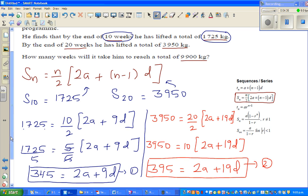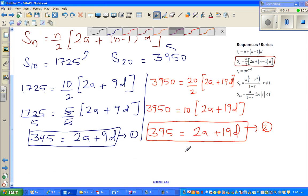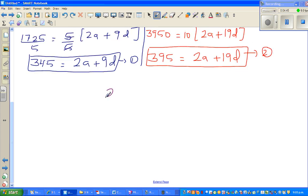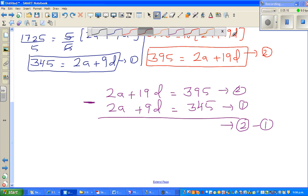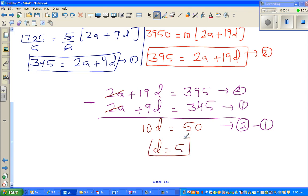This has become a simultaneous equation. I'm going to write the bigger equation first: 2a plus 19d is 395, and 2a plus 9d equals 345. If you take away, I'm going to do equation 2 minus equation 1. 2a minus 2a gets canceled. 19d take away 9d is 10d, and 395 take away 345 is 50. So 10d is 50, therefore d is 5. The common difference is 5.